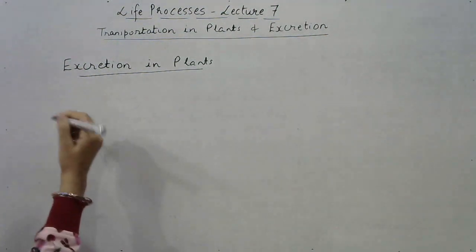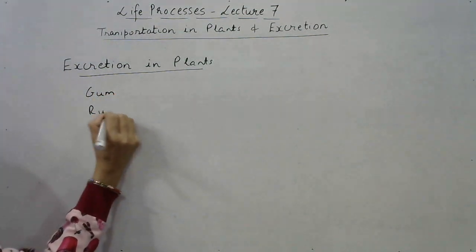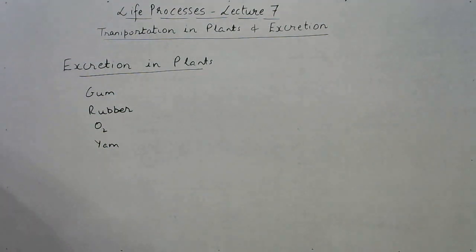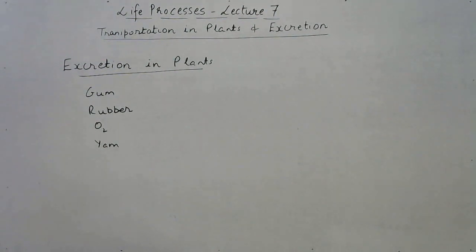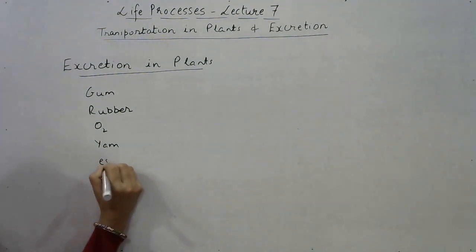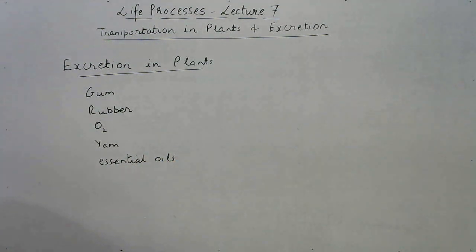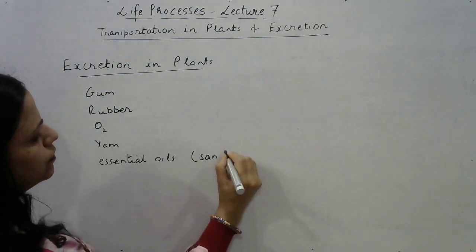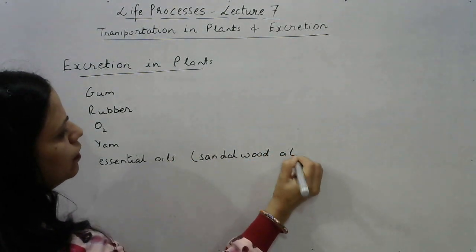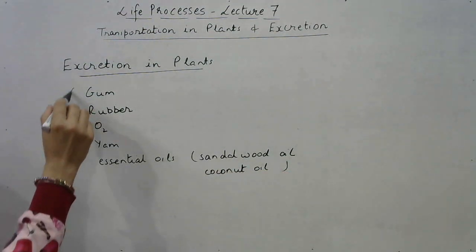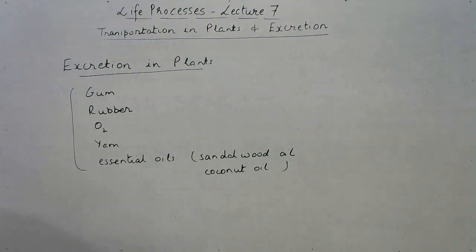Let me list down some of the plant waste products: oil, gum, rubber, and oxygen. Then there is yam, which is jimikand in Hindi. Some essential oils which we get from plants are also a waste for the plants, although useful for us — like sandalwood oil and coconut oil. So these are some plant waste products which are beneficial for human beings or which we use in our daily lives. This is all about excretion in plants.